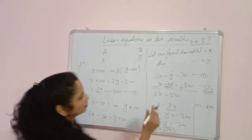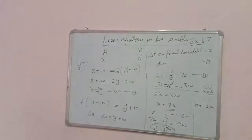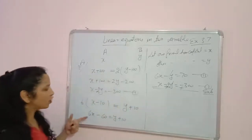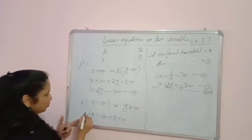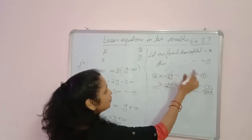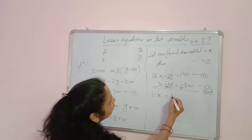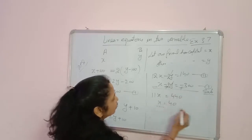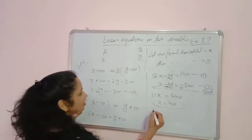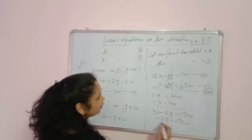Correcting: equation 1 is X minus 2Y equals minus 300. We multiply equation 2 by 2 to get 12X minus 2Y equals 140. Subtracting equation 1 from this: 11X equals 440, so X equals 40. Putting X equals 40 into equation 1: 40 minus 2Y equals minus 300, so minus 2Y equals minus 340, giving Y equals 170.